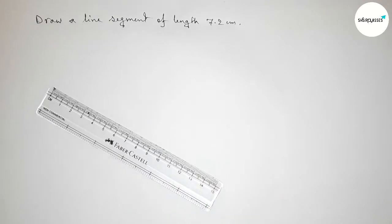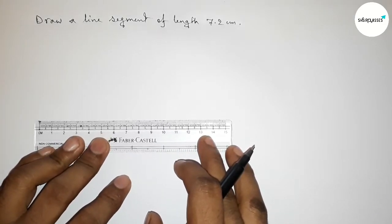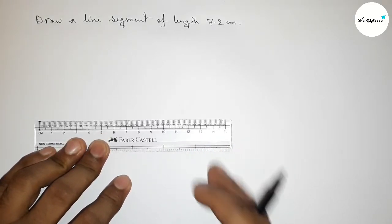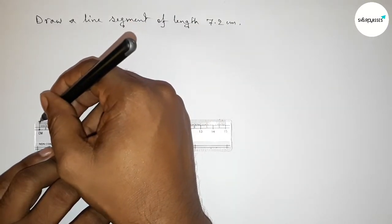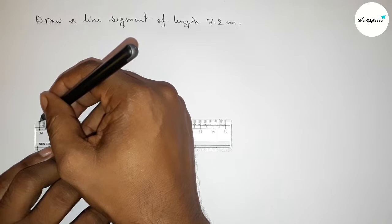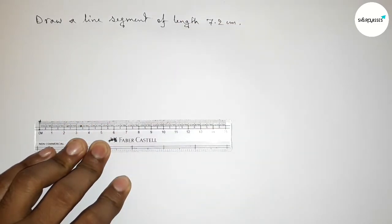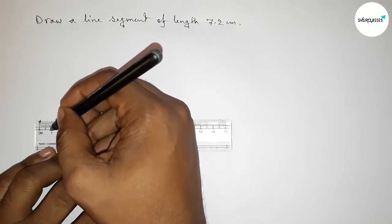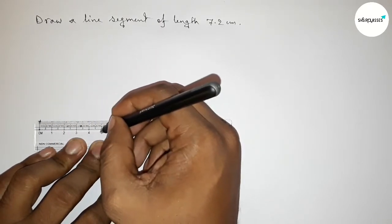First, we have to place the scale here perfectly. Now we are measuring 7.2 centimeters. Starting at zero, we mark zero here, then count: zero, one centimeter, two, three, four, five...